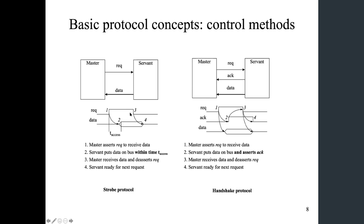The third step is that between the second and third moment, we expect the master to perform the read operation, because after moment two we know valid data is available on the data bus. So the master will be reading the data during this time frame. After reading is completed, the master will de-assert the request signal, finishing the transaction. Once the servant sees the request signal lowered back to zero, it knows the master has finished reading, so it will stop putting data on the bus. At step four, the servant finishes sending data and is ready for the next request.